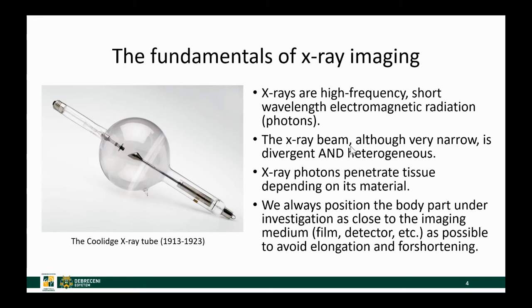A little about the fundamentals of x-ray imaging: x-rays or photons are high-frequency, short-wavelength electromagnetic radiation. They are generated in x-ray tubes, which haven't changed much since they were invented. Even though the beam that exits this vacuum glass is narrow, it's quite divergent — that's why we need shielding.